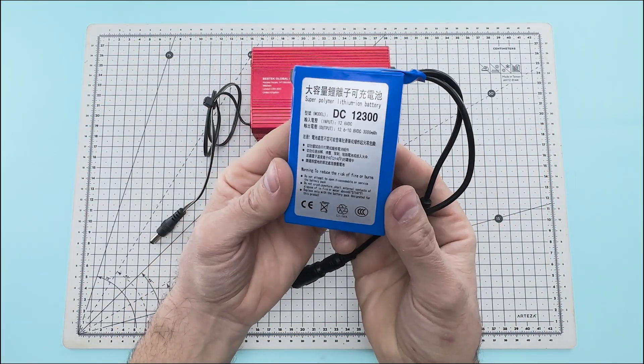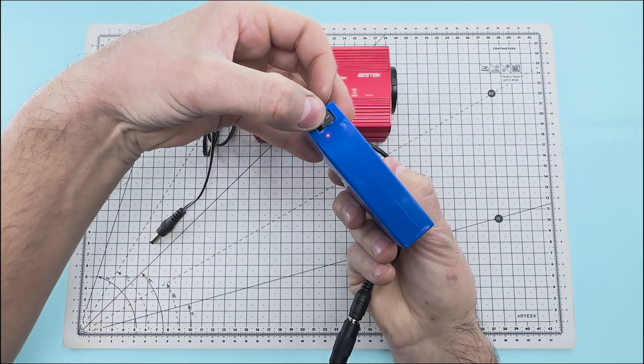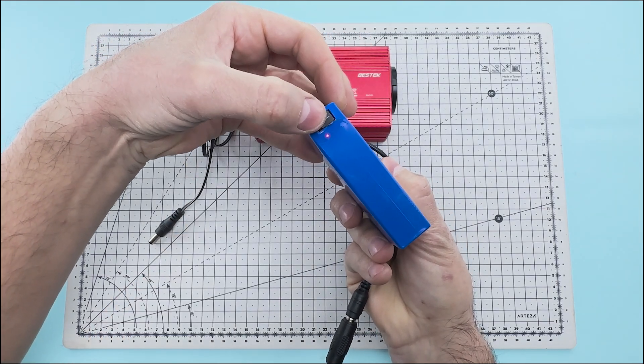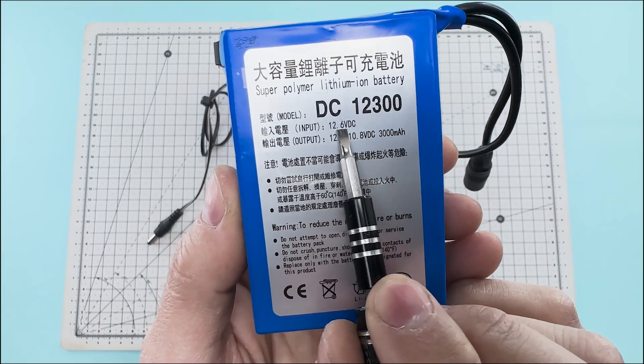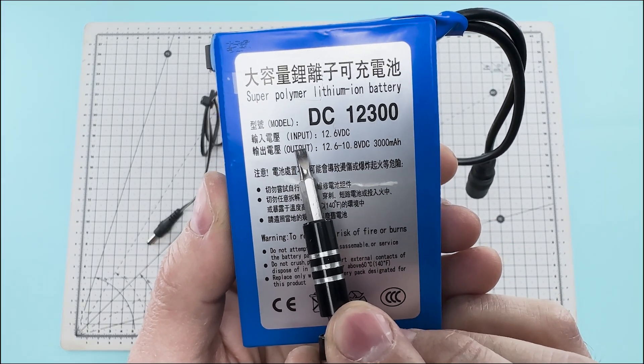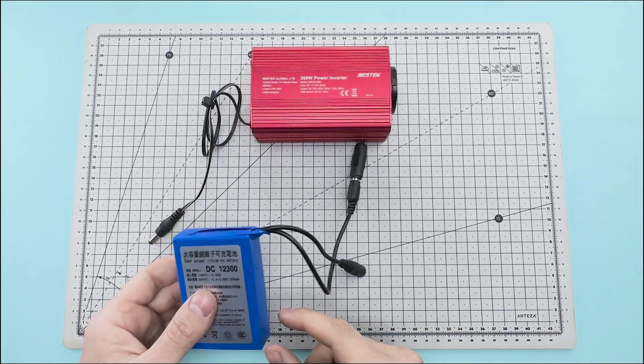We will also use a 12 volts direct current lithium battery. This battery has a switch to turn it on and off. The battery has a connector that accepts a charging voltage of 12.6 volts and it also has a connector that delivers a direct current of 12 volts.